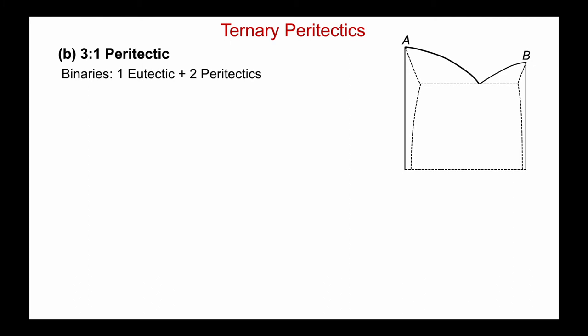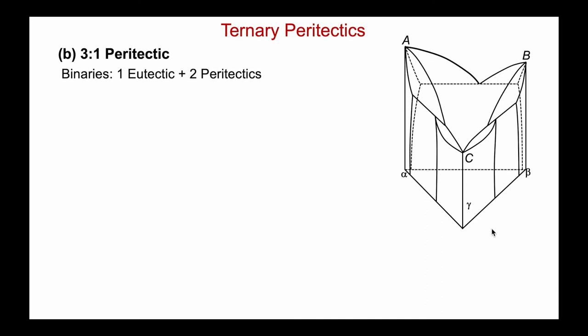The second type of peritectic is the so-called three-to-one equilibrium. This occurs where one of the binaries is a eutectic — I've shown the AB system — and there are two peritectics. Let's build up the space diagram: AC is a peritectic, with the liquid composition outside the two solids; and in BC, the second peritectic, the liquid lying outside gamma and beta.